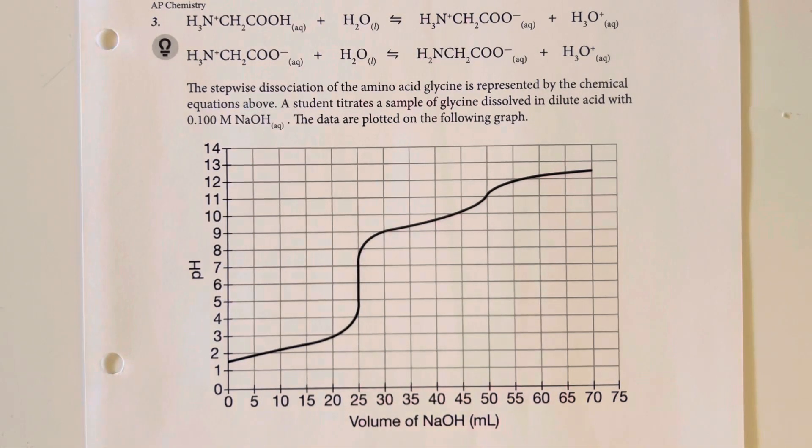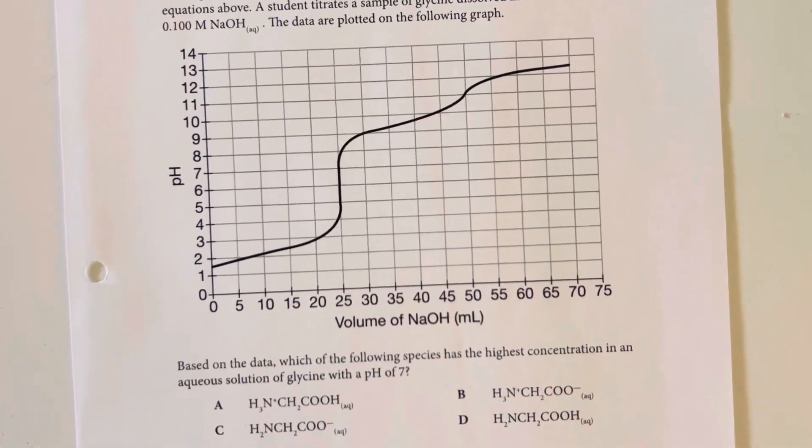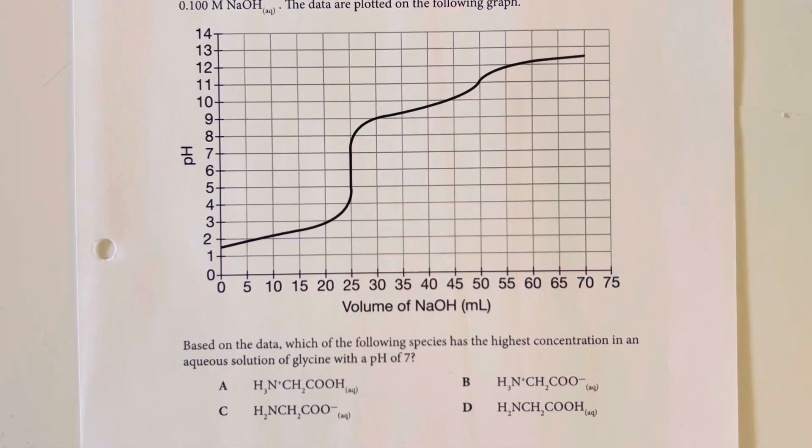The stepwise dissociation of the amino acid glycine is represented by the chemical equation above. A student titrates a sample of glycine dissolved in dilute acid with 0.1 molar sodium hydroxide. The data are plotted in the following graph. Based on the data, which of the following species has the highest concentration in the aqueous solution of glycine when pH is at 7?